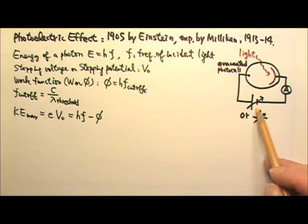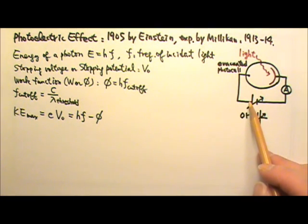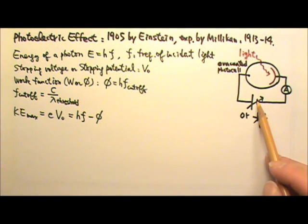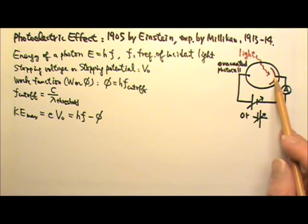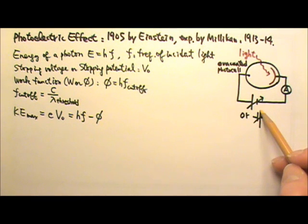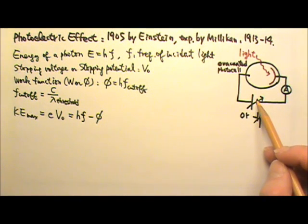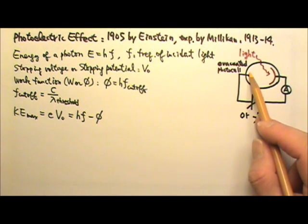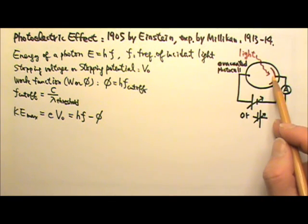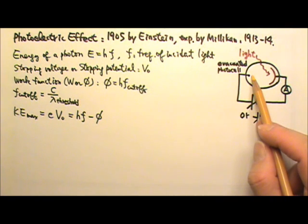A battery tends to push positive current out of the positive terminal and the negative charges out of the negative terminal. With the power supply's polarity like this, it has a tendency to push the negatively charged electrons that way. That's why the freed electrons can move to the other side to produce current.